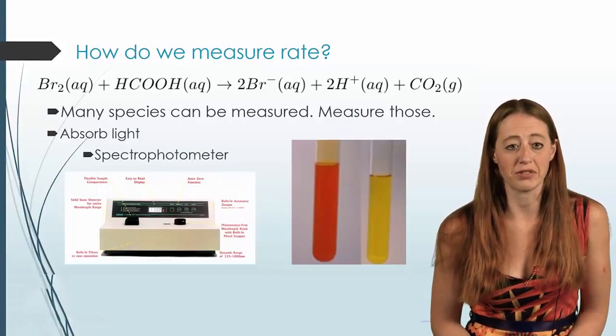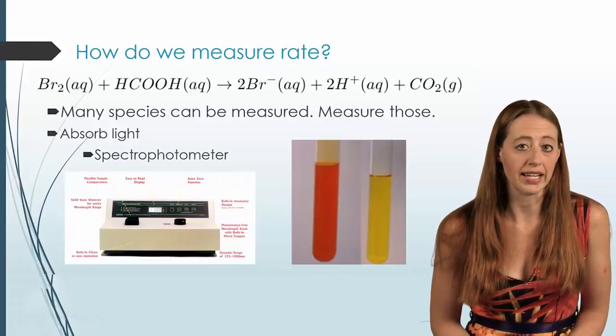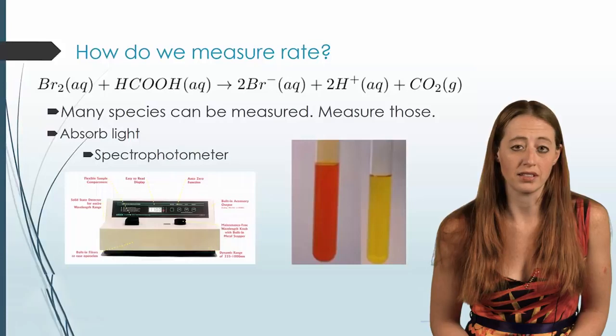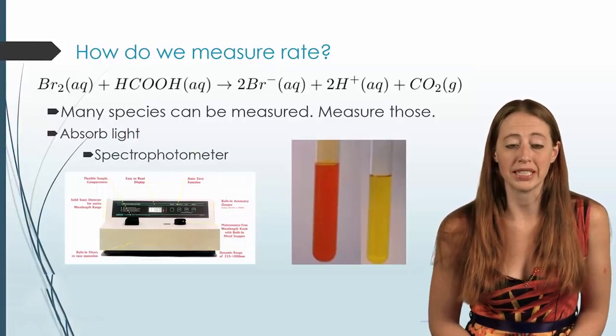So you could use that to measure very specific concentrations. Here I showed bromine just because we can see it with the naked eye as well. But the spectrometer would be able to see it more specifically and be able to relate numbers to it.